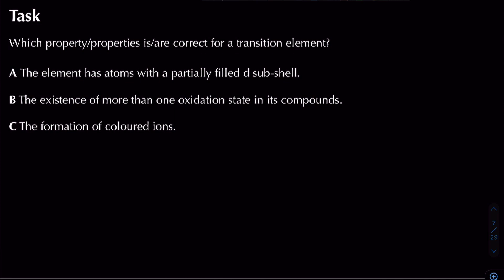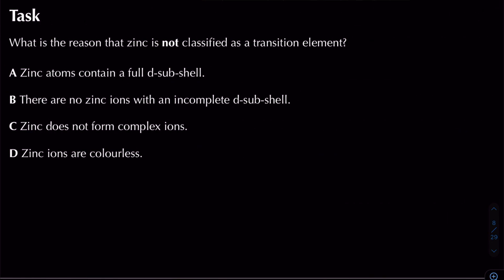Practice question: which properties are correct for a transition element? A — atoms with a partially filled d subshell — is false because we need to consider ions, not atoms. B — more than one oxidation state in its compounds — is true due to variable oxidation states. C — formation of coloured ions — is true. The answer is B and C.